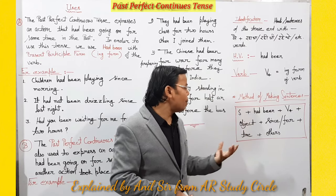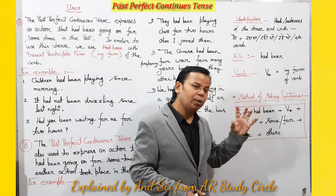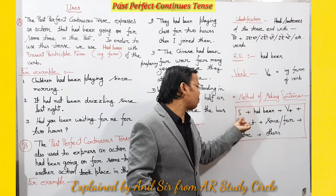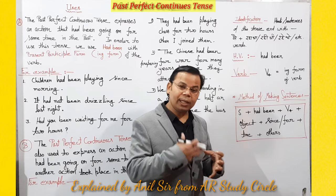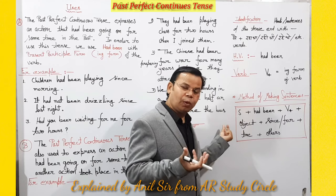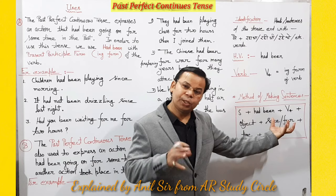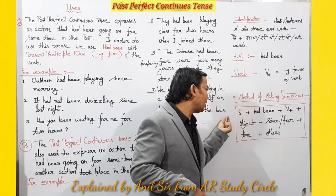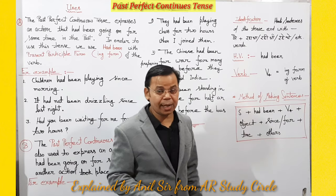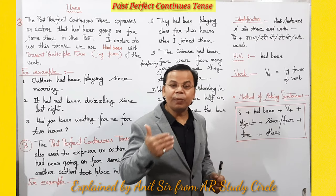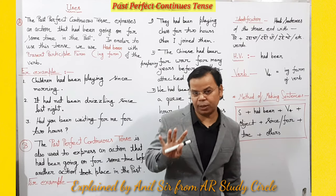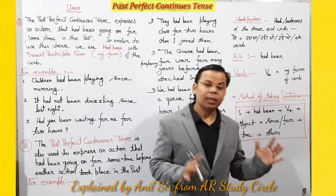Negative sentence mein: 'had' ke baad 'not' aata hai — yani 'had' aur 'been' ke beech mein 'not' ka use hota hai. Interrogative sentence mein: 'had' subject se pehle aata hai. Agar WH-word wala sentence hai — jaise 'Woh do ghante se kyun ro raha tha?' — toh WH-word pehle, phir 'had', phir subject, phir 'been'. Interrogative negative mein: 'had', subject, 'not', 'been' — yeh pattern follow karo.